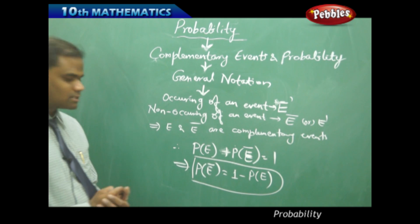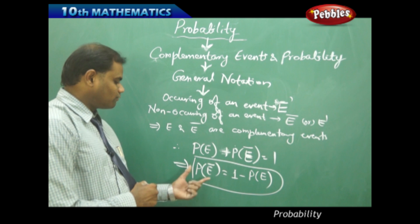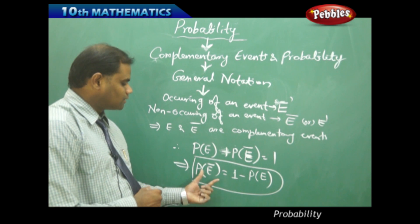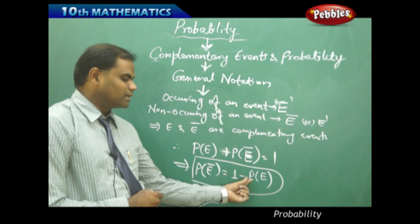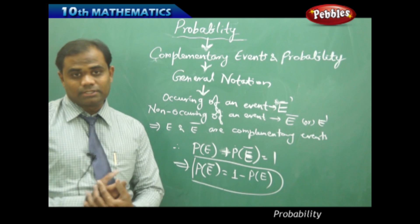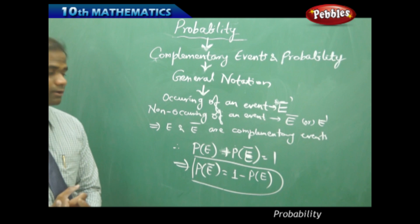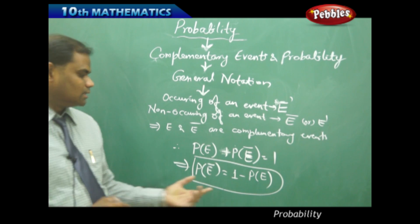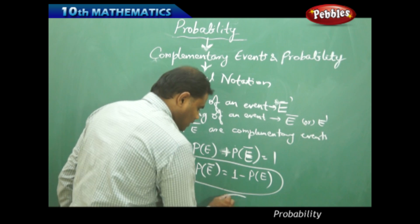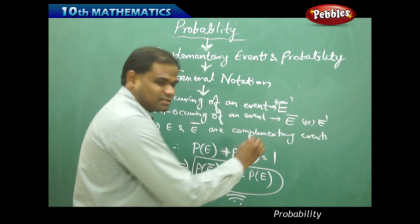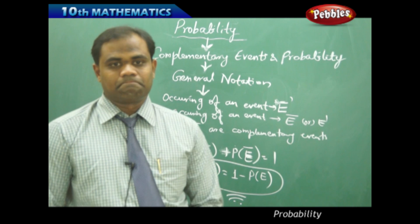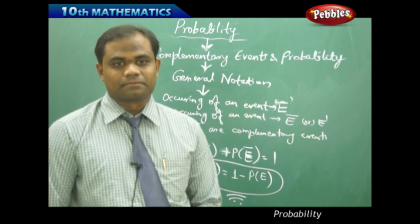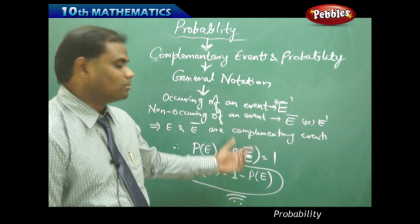To read this in words: the probability of non-occurring of an event equals 1 minus the probability of occurring of that event. This is how we understand this mathematical formula connected with complementary event probability.